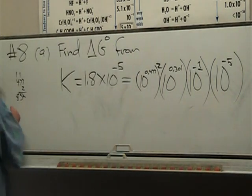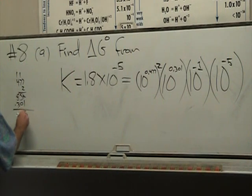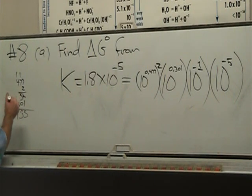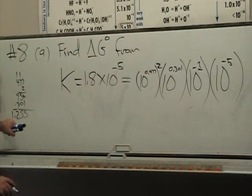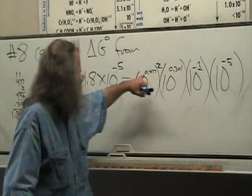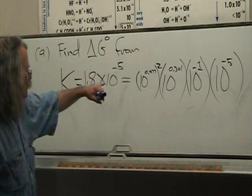So then 0.477 times 2 is 0.954. Plus 0.301 is 1.255. So this whole business here adds up to 10 to the 1.255.